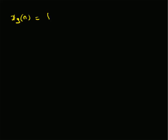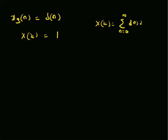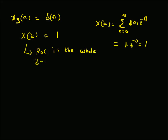For x3(n) given by the unit sample function delta(n), X(z) is the summation from n equals 0 to infinity of delta(n) z to the power minus n. Since delta(n) is 1 only at n equals 0 and 0 everywhere else, this equals 1 times z to the power 0, which is 1. So X(z) equals 1 for the delta function, and the ROC is the entire z-plane including both z equals 0 and z equals infinity.